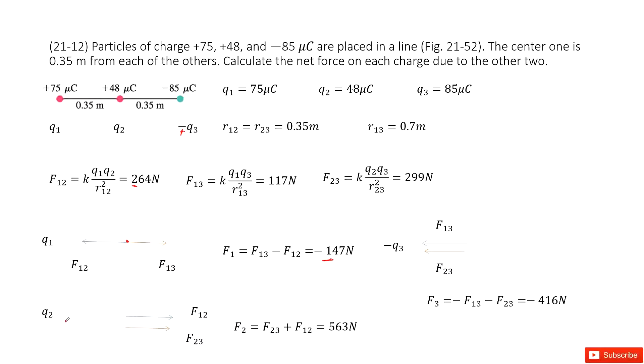And also we look at particle 2. For particle 2, we look at particle 1 and 2, these are positive charges, so repulsive force F12 pointing to the right. And then particle 2 and particle 3, this is attractive force, also pointing to the right, F23. So we can get the net force on particle 2, F2 equals F23 plus F12, which is 563 newtons.